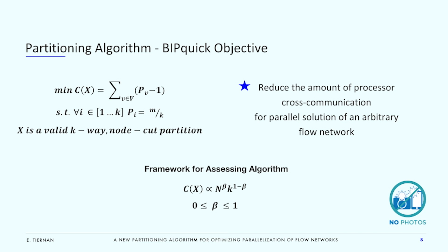On this slide, I also define a useful metric for assessing the algorithm's performance. I assume that the amount of connectivity — that is, the number of nodes that exist on multiple parts — is related to both the size of the network and the number of parts sought. A good algorithm will scale much more closely with the number of parts sought than with the size of the system, as the number of parts is likely to be much smaller than the total number of elements. A good algorithm can therefore be identified as having a beta coefficient near zero.